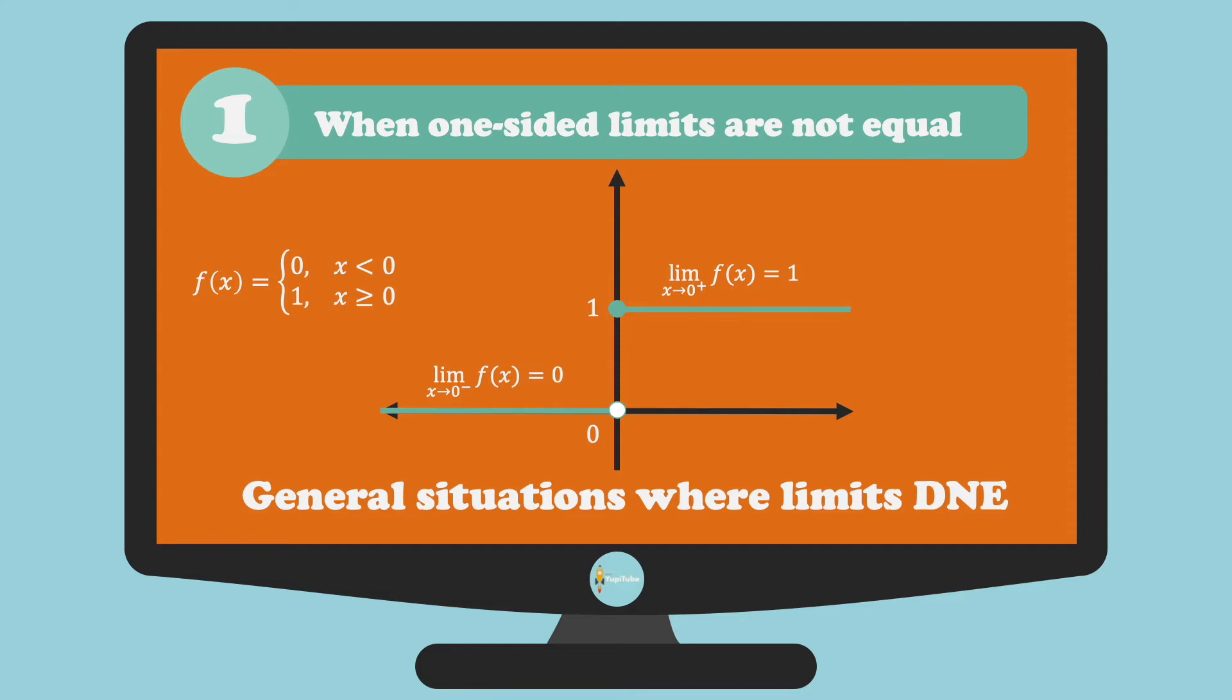As you can see, the one-sided limits are not equal. Thus, the limit doesn't exist. Symbolically it appears like this: the limit of f(x) as x approaches 0 is equal to DNE.